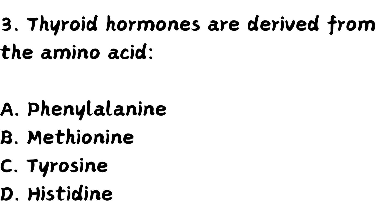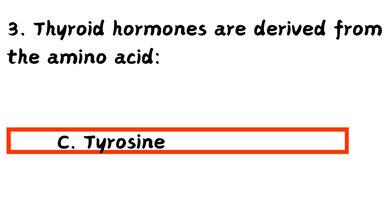Next question: thyroid hormones are derived from which of the following amino acids? Option A, phenylalanine. Option B, methionine. Option C, tyrosine. Option D, histidine. The right answer is Option C, tyrosine. Thyroid hormones are derived from the amino acid tyrosine.